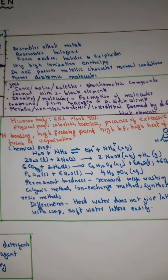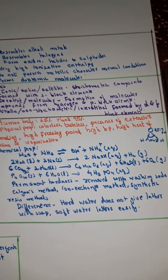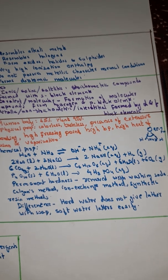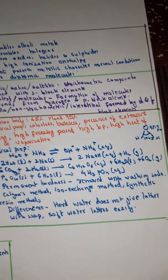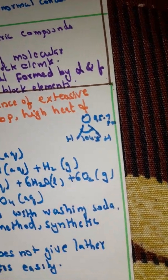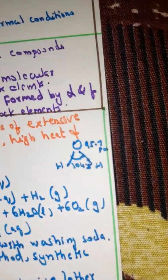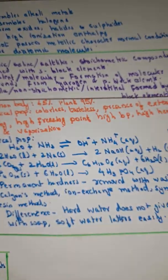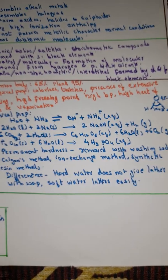Water content: human body contains 65%, plants contain 95% water. Physical properties are colorless, tasteless, presence of extensive hydrogen bonding, high freezing point, high boiling point, high heat of fusion and high heat of vaporization. The bond angle between two hydrogen atoms is 104.5° and between oxygen and hydrogen is 95.7 pm.